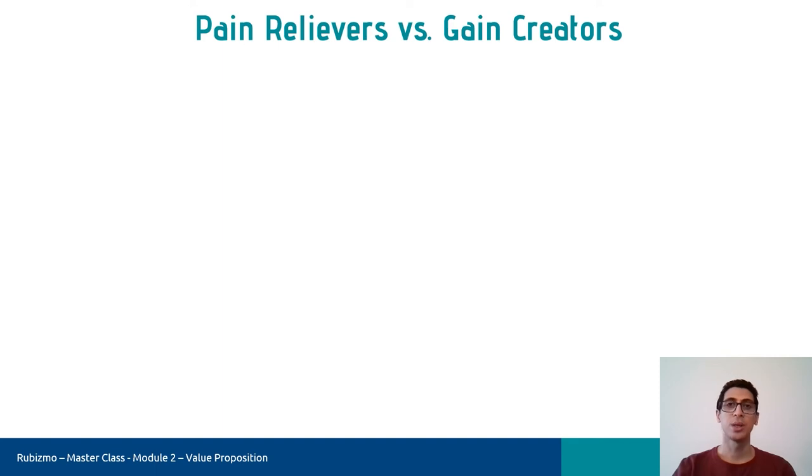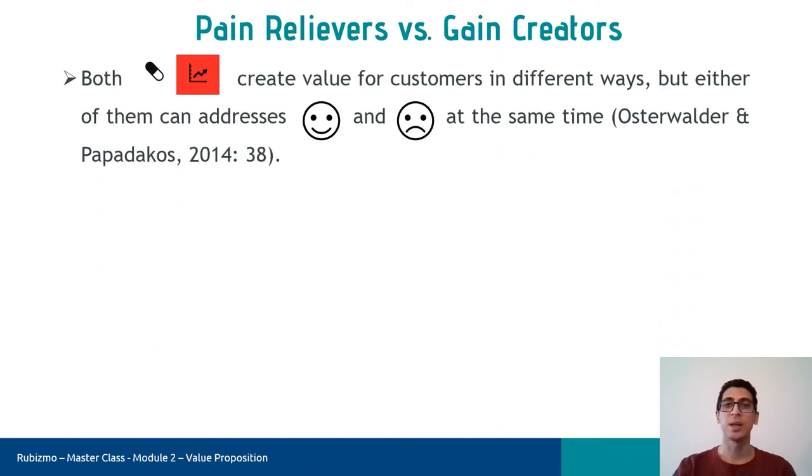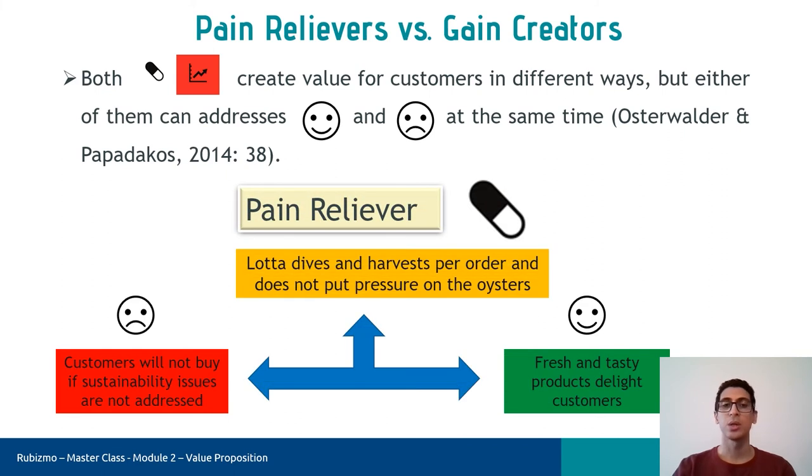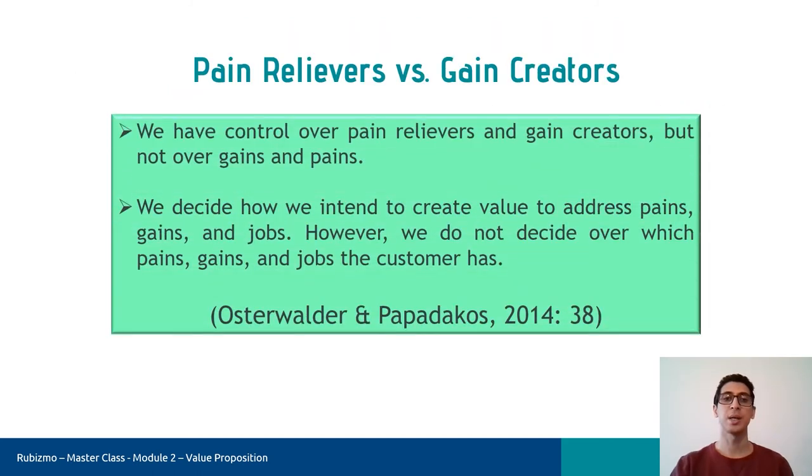So, before I show you how the customer profile and value map fit together, let me say that pain relievers and gain creators create value for customers in different ways, but either of them can address pains and gains at the same time. For example, when it comes to Luta dives and harvests per order and doesn't put pressure on the oysters, you can see that sustainability concerns and freshness are addressed at the same time. The important tip here is that we have control over pain relievers and gain creators, but not over gains and pains. In fact, we decide how we intend to create value to address pains, gains, and jobs. However, we don't decide which pains, gains, and jobs the customer has.